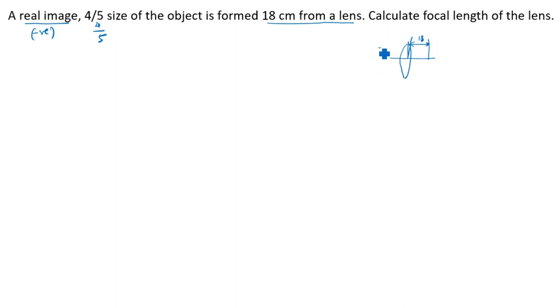Always this side is negative, this side is positive. Object is always negative for lens and mirror. You see here, this is object here. What is given in this question? V image is given, so image is plus 18 centimeters.